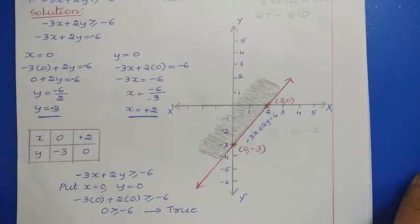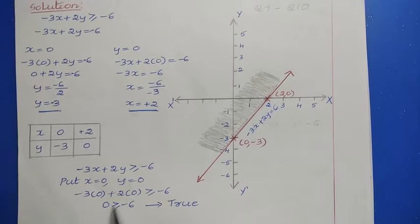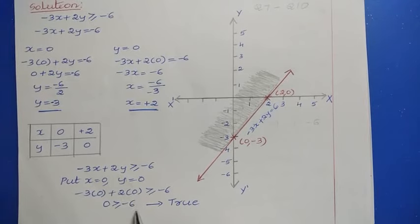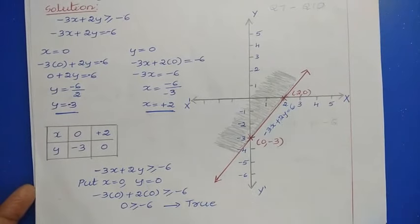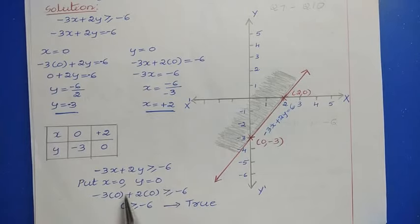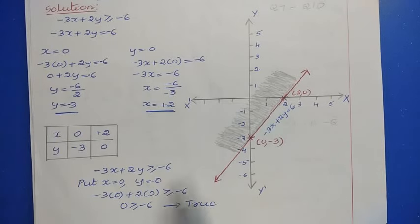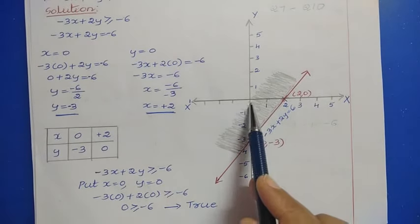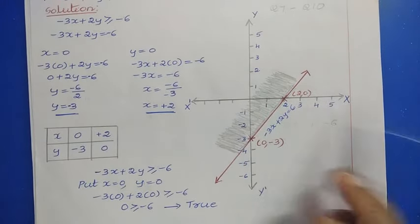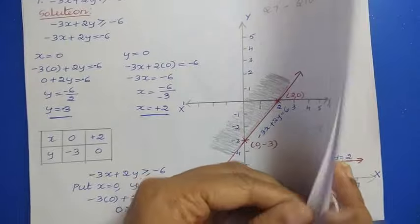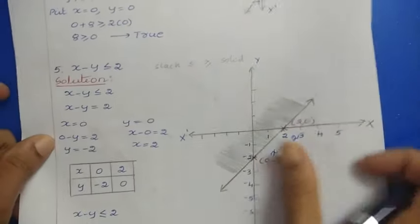To find the shaded region, substitute x = 0 and y = 0 into -3x + 2y ≥ -6. We get 0 ≥ -6, which is a true inequality. Since we used the origin (0, 0) and got a true result, we shade the area towards the origin. That completes question number 7.